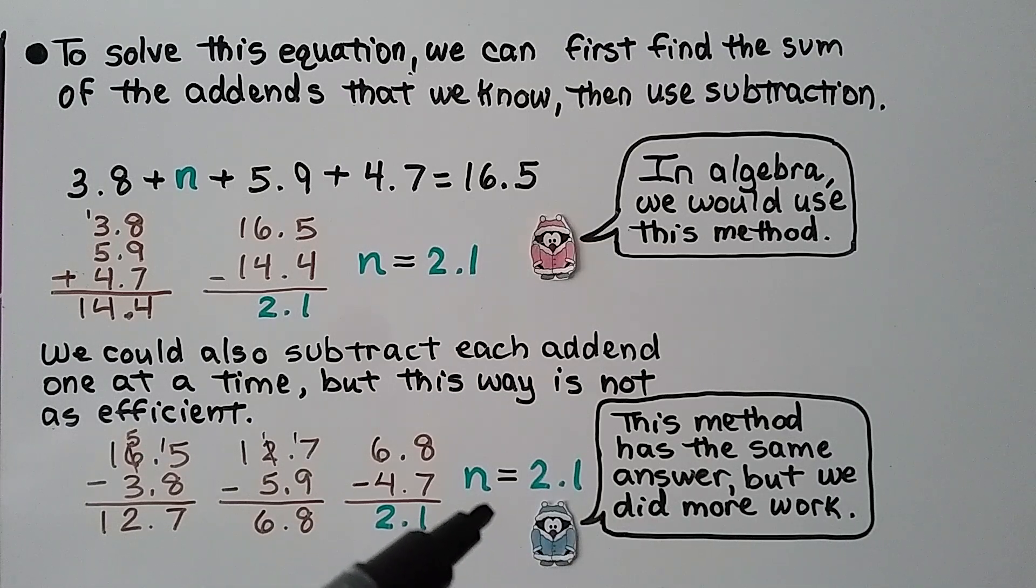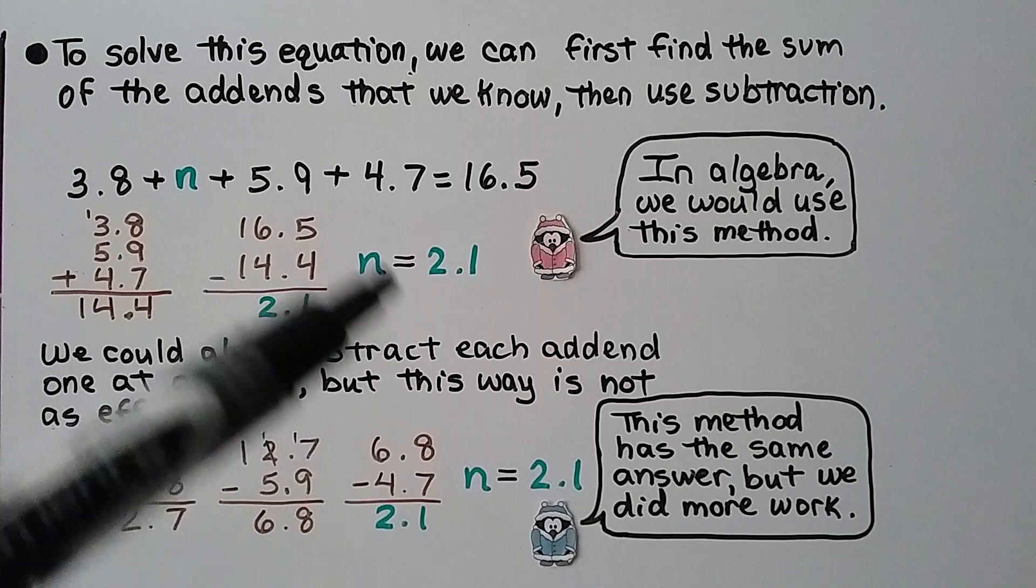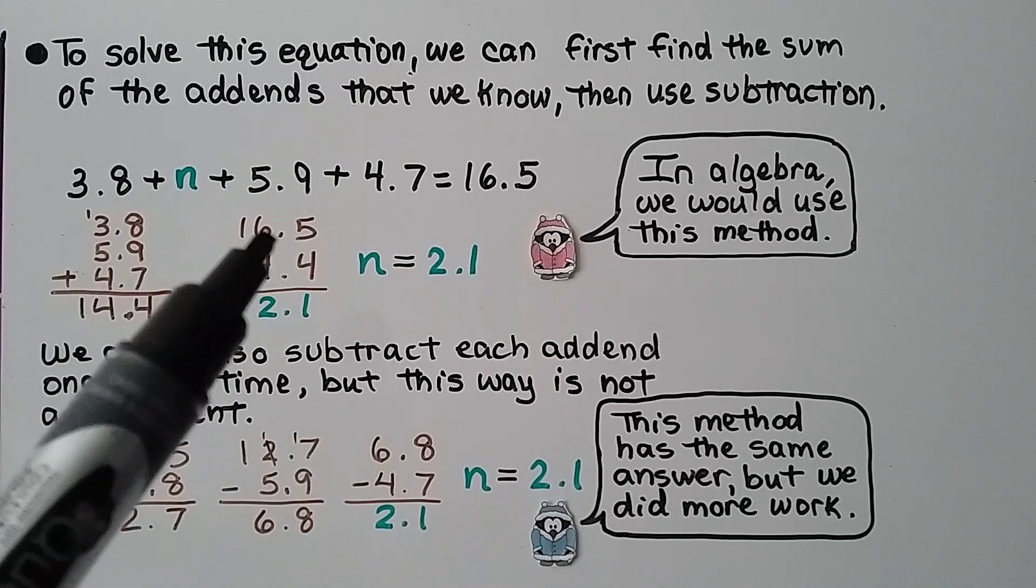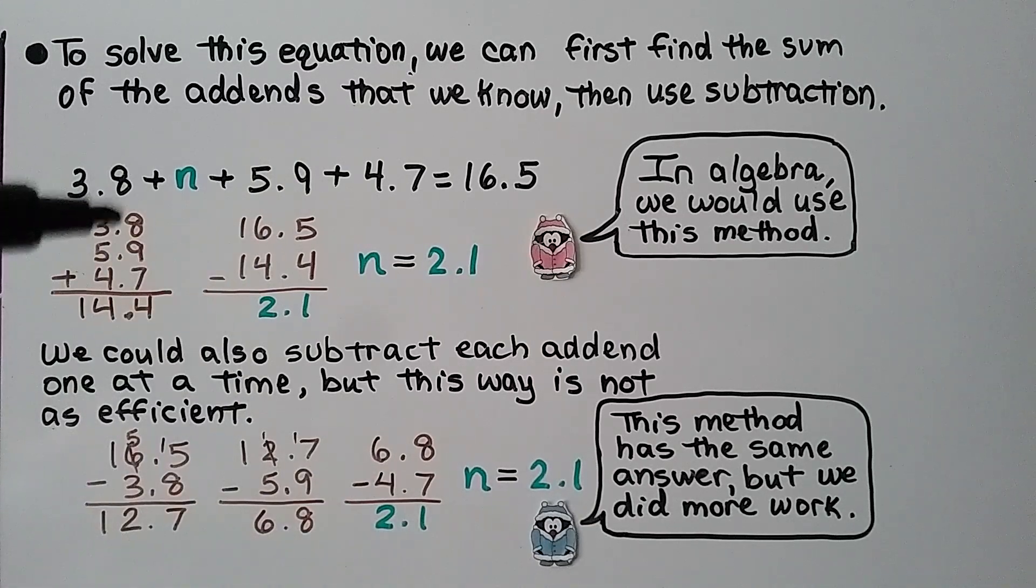And n is equal to 2.1. So, we got the same answer, but we did more work. We have 3 equations here. We only have 2 equations here. And in algebra, we would use this method. It's more efficient.